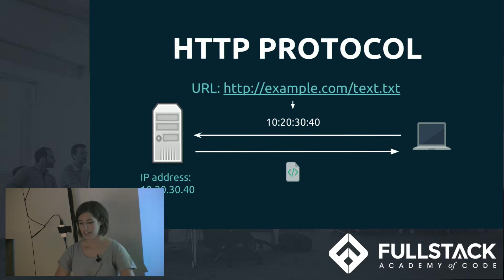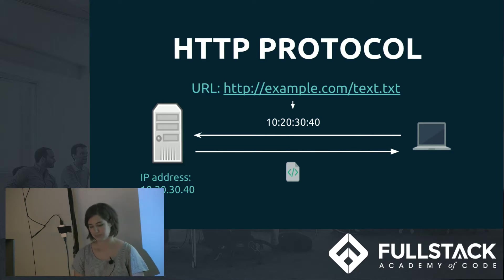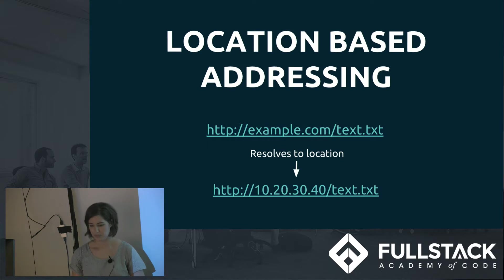So let's go back to the basics. In the HTTP protocol, when you request a file, you provide a URL. The first thing in the URL is a domain name, which resolves to the IP address of the server hosting that file. So the client is initiating this journey through the network to find the server where the file is located. This is called location-based addressing — every time you request a file, you specify the location of the server and go there to retrieve it.